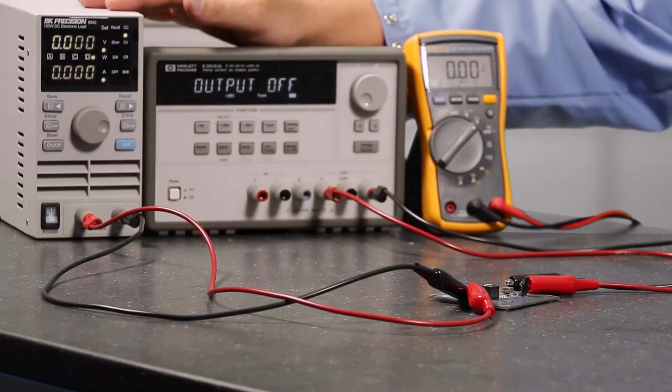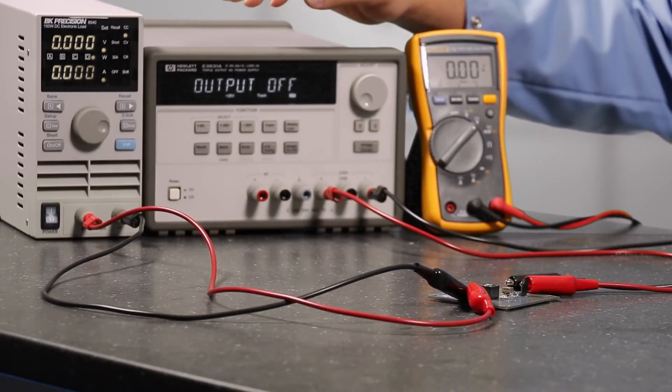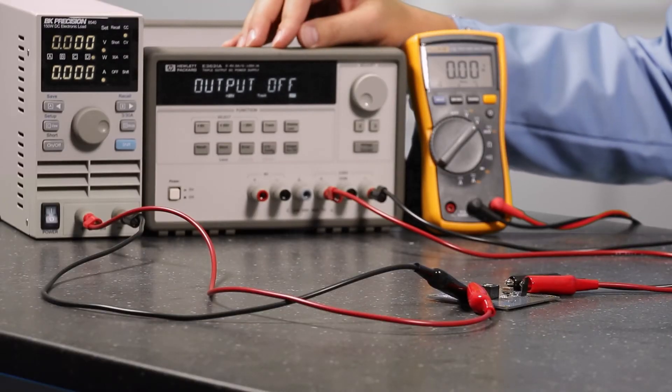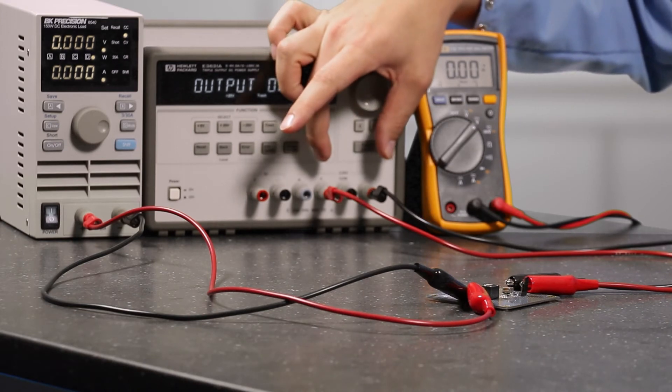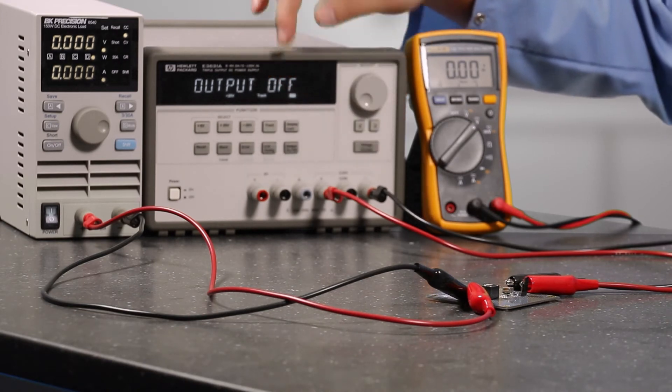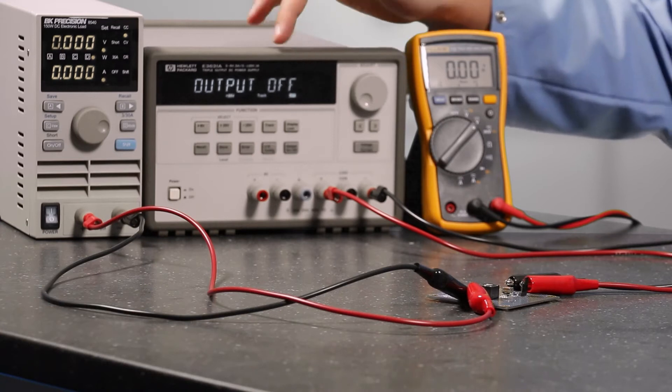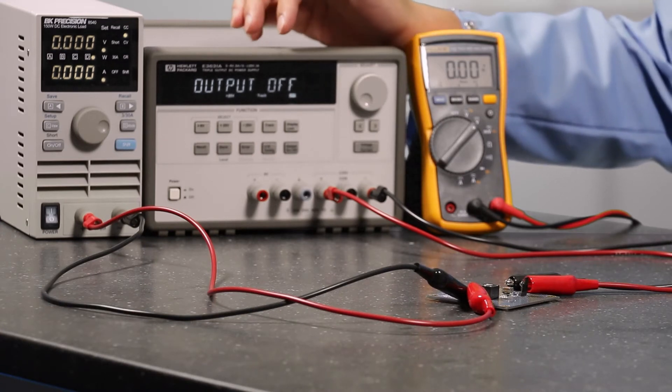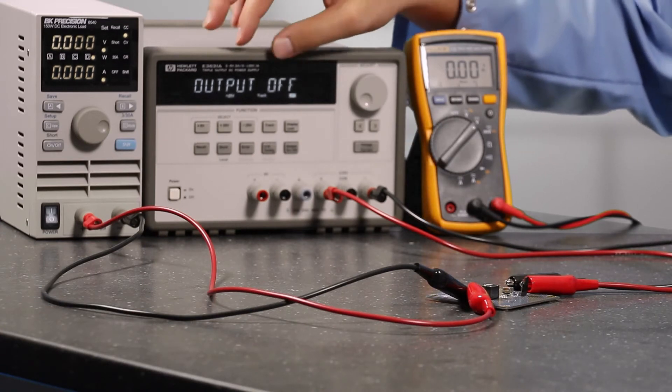For the setup I have this DC load set to draw 3 amps and I have the output of this triple output power supply across the positive and negative voltage so I can get up to 50 volts. The output is set to track so as I adjust one it actually adjusts both, so the voltage on here is twice what's displayed.